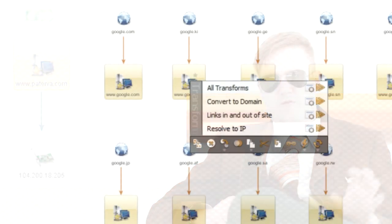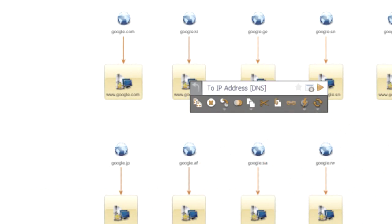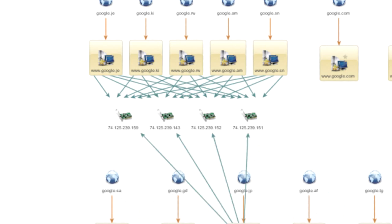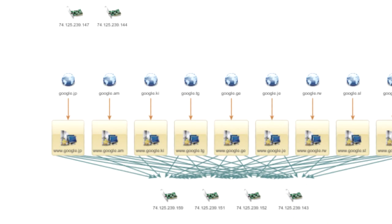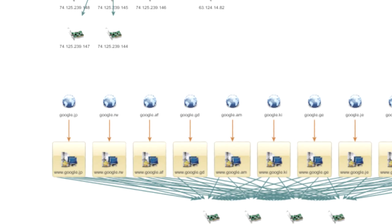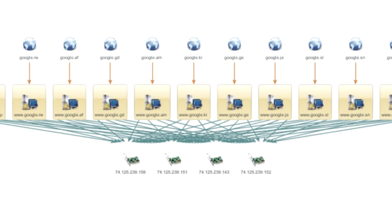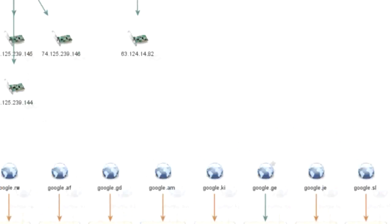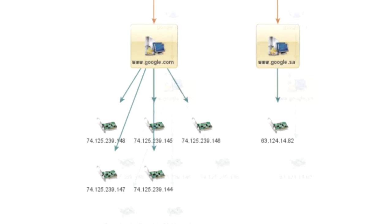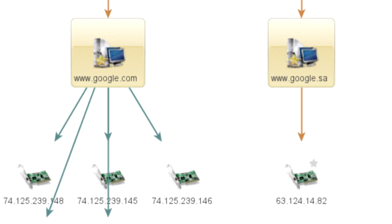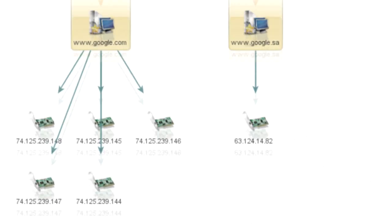Of course, you can run transforms across a number of different entities, and then you can look for correlation. This is really the true power of Maltego — when you get to first, second, third order, you'll be able to see multiple different types of information that link up to similar pieces, and then you get that intelligence from the tool.